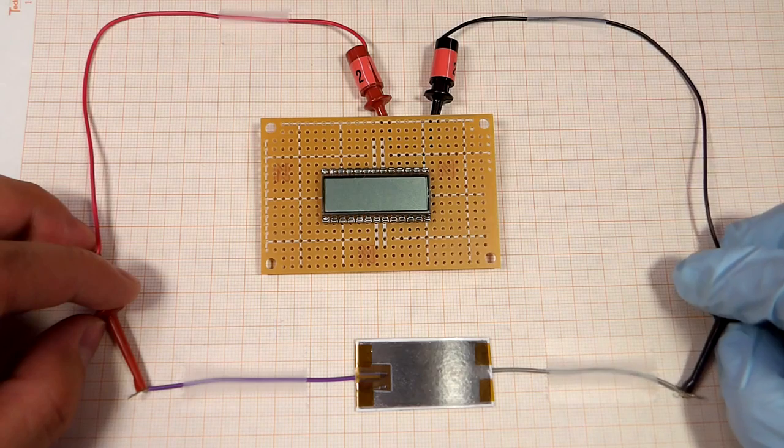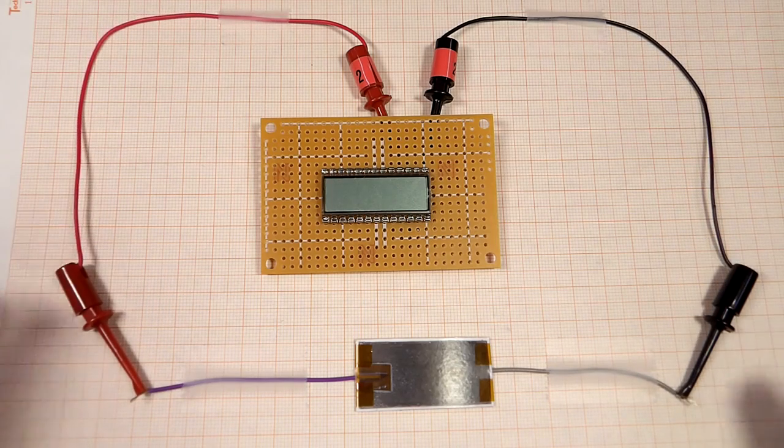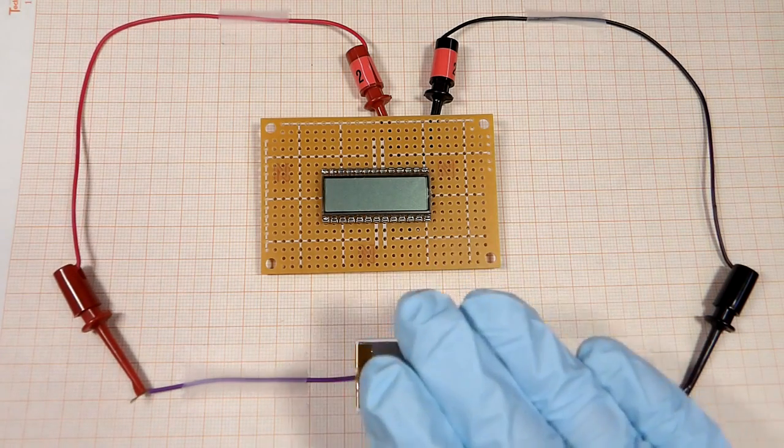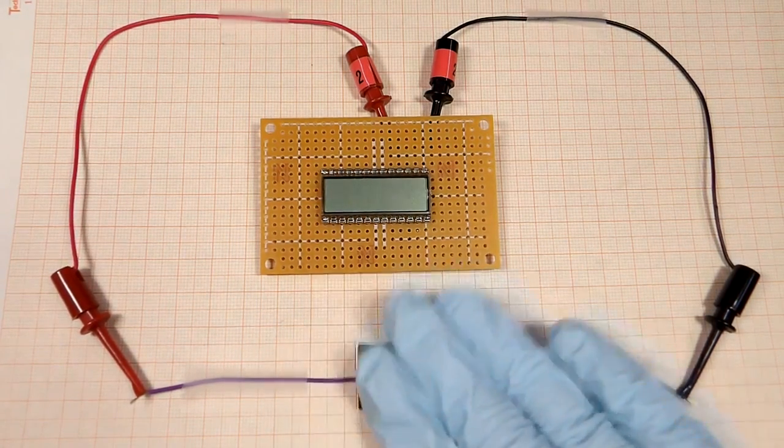To generate electrical power efficiently, hook up the device to a capacitor and press down on your paper power source at a constant rate of one and a half times every second.